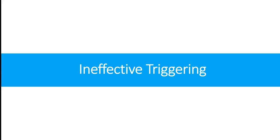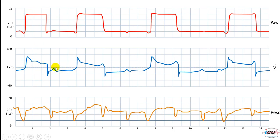We will be discussing ineffective triggering in dynamic hyperinflation syndrome. What we're looking at here is pressure over time, flow over time curves, in addition to esophageal pressure tracing. This is in a patient who is on pressure support mode of ventilation for chronic obstructive lung disease exacerbation.